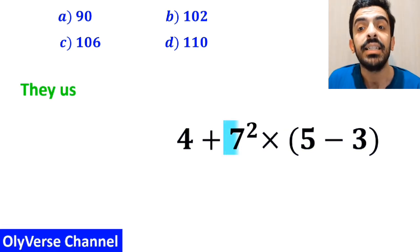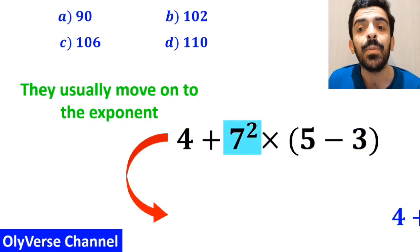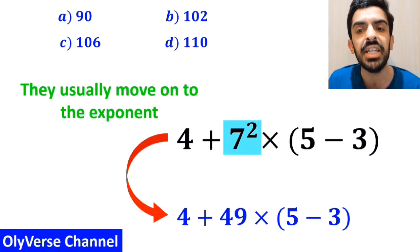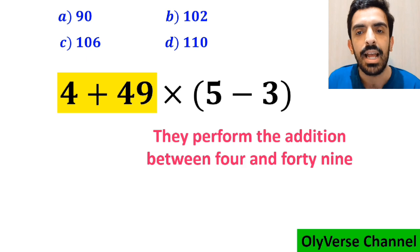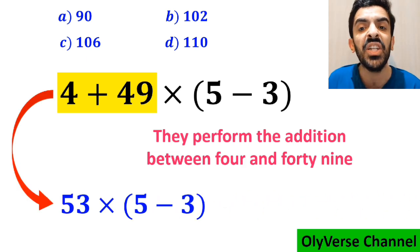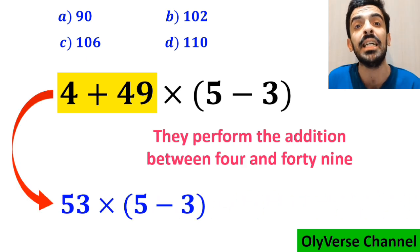In the next step, they usually move on to the exponent and replace this expression with 4 plus 49 times 5 minus 3 inside the parenthesis. Then they perform the addition between 4 and 49 and simplify this expression to 53 times 5 minus 3 inside the parenthesis.